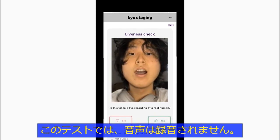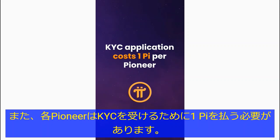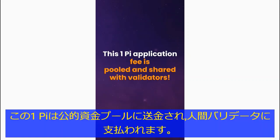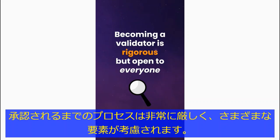No audio is recorded during the liveness test. Also note that each Pioneer contributes one Pi to get KYC'd. This Pi is pooled and given to the human validators for their work. Anyone can apply to become a validator as long as they have passed KYC themselves, but the process to get approved is quite rigorous and looks at many different factors.